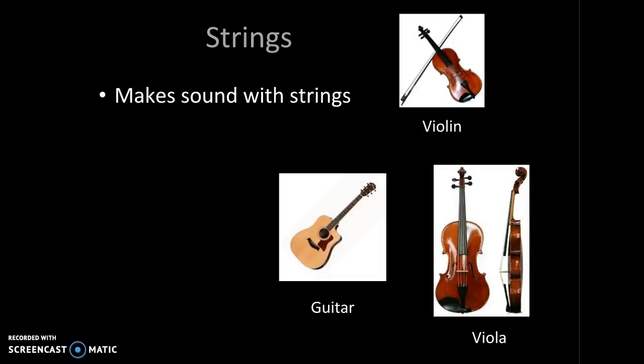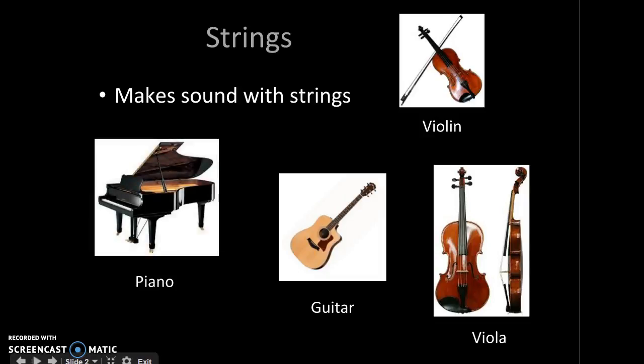The next instrument is a piano. A piano is played by playing keys on a keyboard. The keys use a hammer to hit the strings to make the sound vibrate. Here is what a piano sounds like.